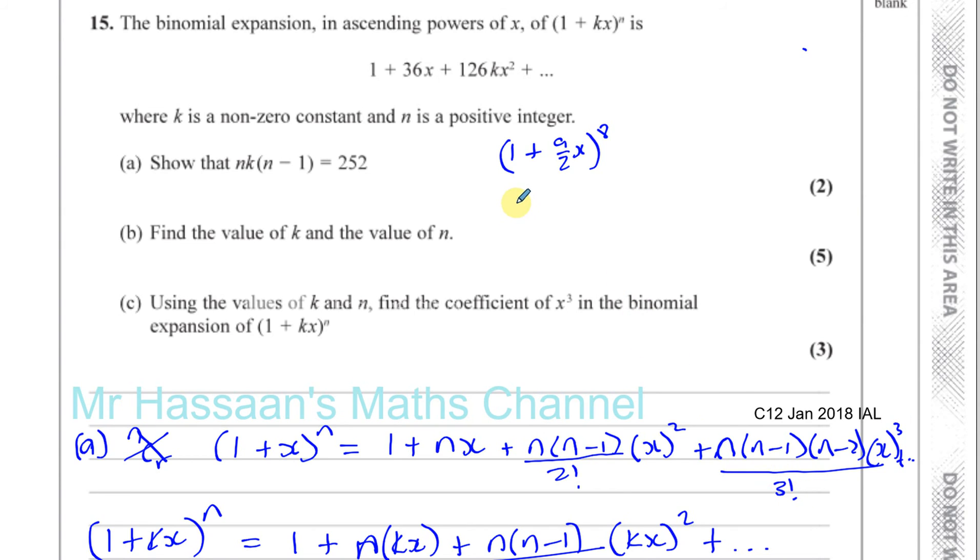I just need the part n times n minus 1 times n minus 2 times x cubed over 3 factorial. So, n is 8. So, you've got 8 times 7 times 6. That's n, n minus 1, n minus 2 over 3 factorial, which is 3 times 2 times whatever x is, which is 9 over 2, and that has to be raised to the power of 3. Okay? Because this is our expansion for the x cubed part. n times n minus 1 times n minus 2 times x cubed over 3 factorial. Or we could use ncr once we know what these are. But I much prefer this.